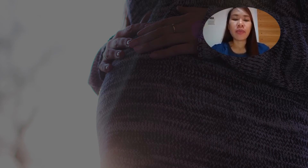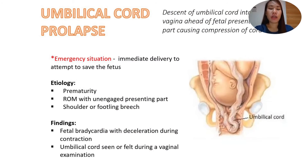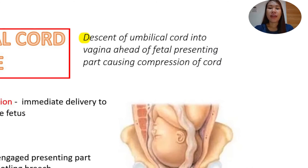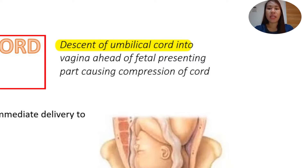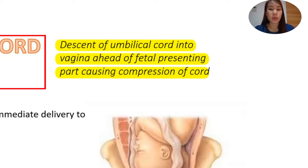So at this time, we will be discussing about umbilical cord prolapse. By definition, this is defined as the descent of the umbilical cord into the vagina ahead of the fetal presenting part, which causes compression of the cord. In Tagalog, instead of the head coming out first, the umbilical cord comes out first.